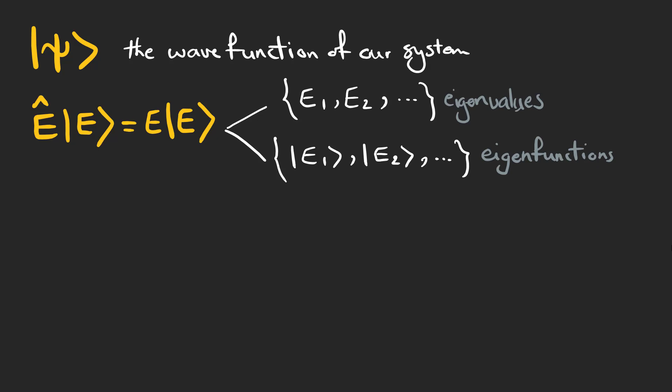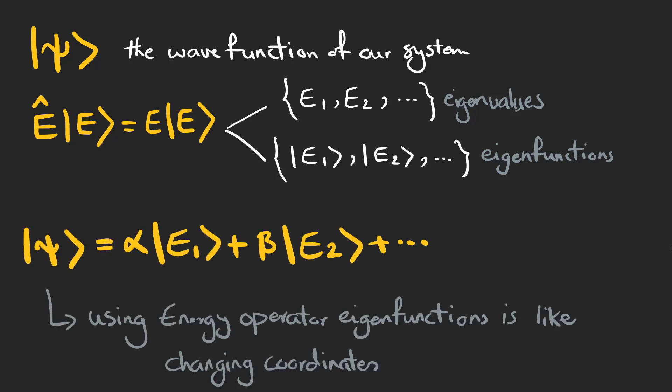Now, if we have a state ψ and want to calculate the energy of the system, we can write ψ as a linear combination of energy operator eigenvectors, and the coefficients show the probability that ψ is in that specific energy.